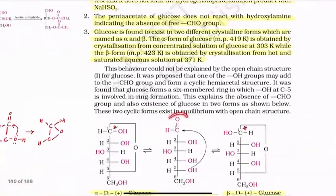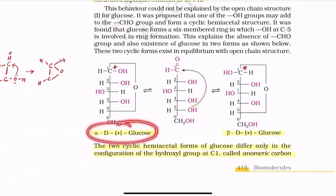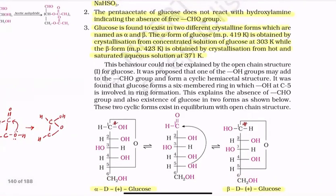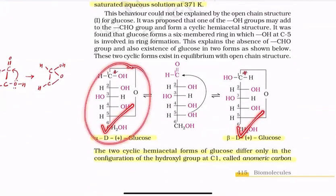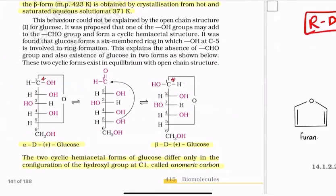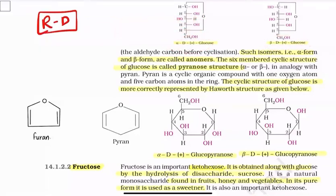During cyclization of the linear structure into the cyclic hemiacetal form, two types of glucose are formed: alpha-D-glucose and beta-D-glucose. Crystallization at 303 K gives majorly the alpha form, while crystallization at 371 K gives majorly the beta-D form. Alpha-D-glucose and beta-D-glucose are anomers with respect to each other, and C1 is the anomeric carbon. That's why glucose can become two different isomers.